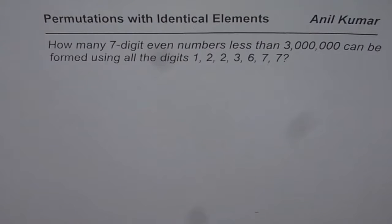The question here is: how many 7-digit even numbers less than 3 million can be formed using all the digits 1, 2, 2, 3, 6, 7, 7?